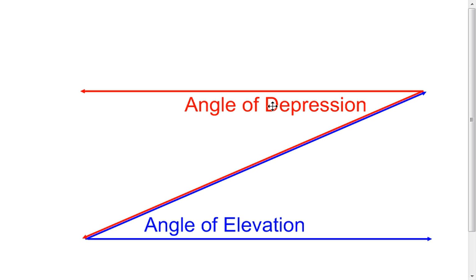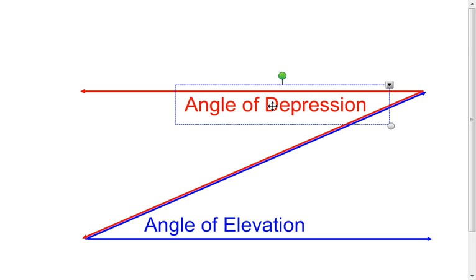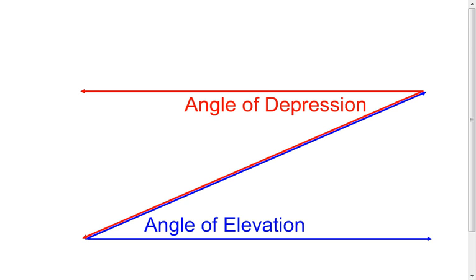When I look at my angle of depression, I notice that here's my horizontal side of my angle, and then the other side is going down — it's depressing. One side is horizontal, the other side is going down. In the angle of elevation, one side is horizontal, the other side is going to go upward — it's going to elevate. That's how they get their name of angle of elevation and angle of depression.